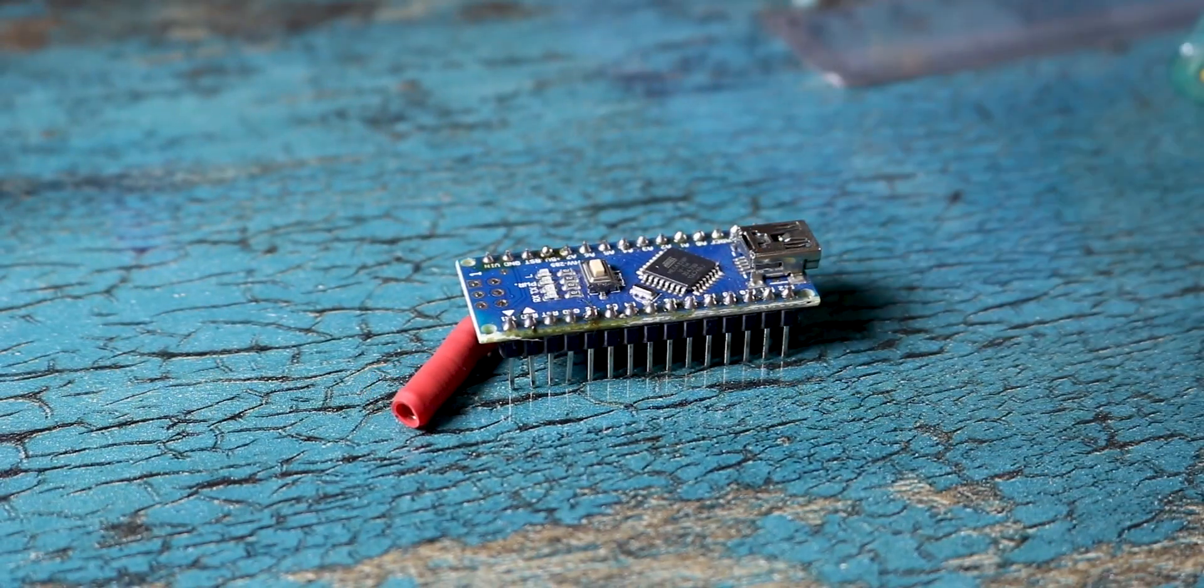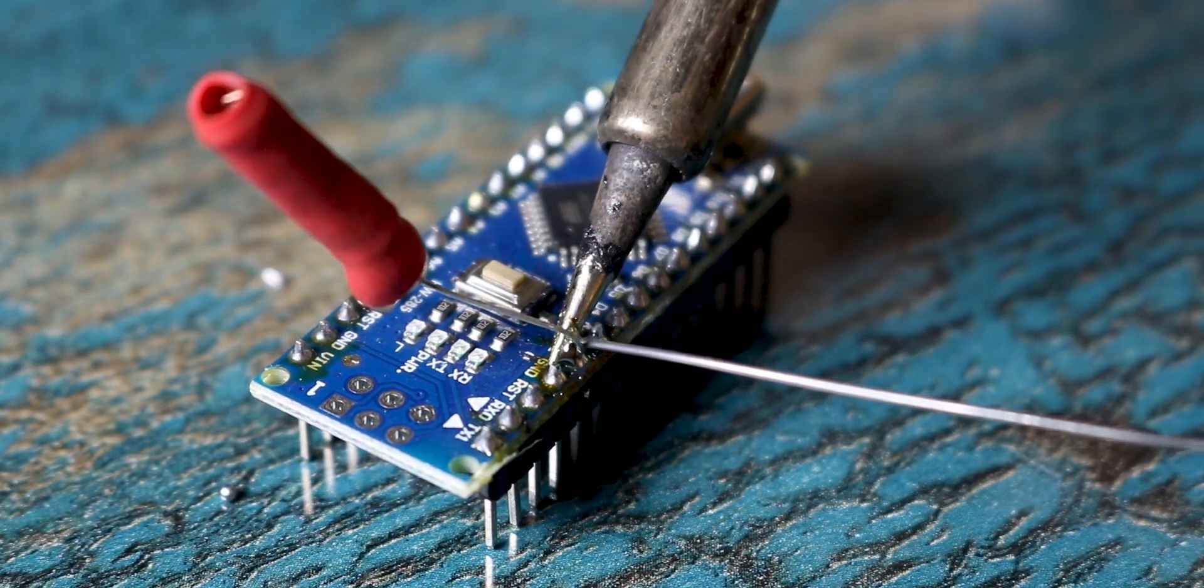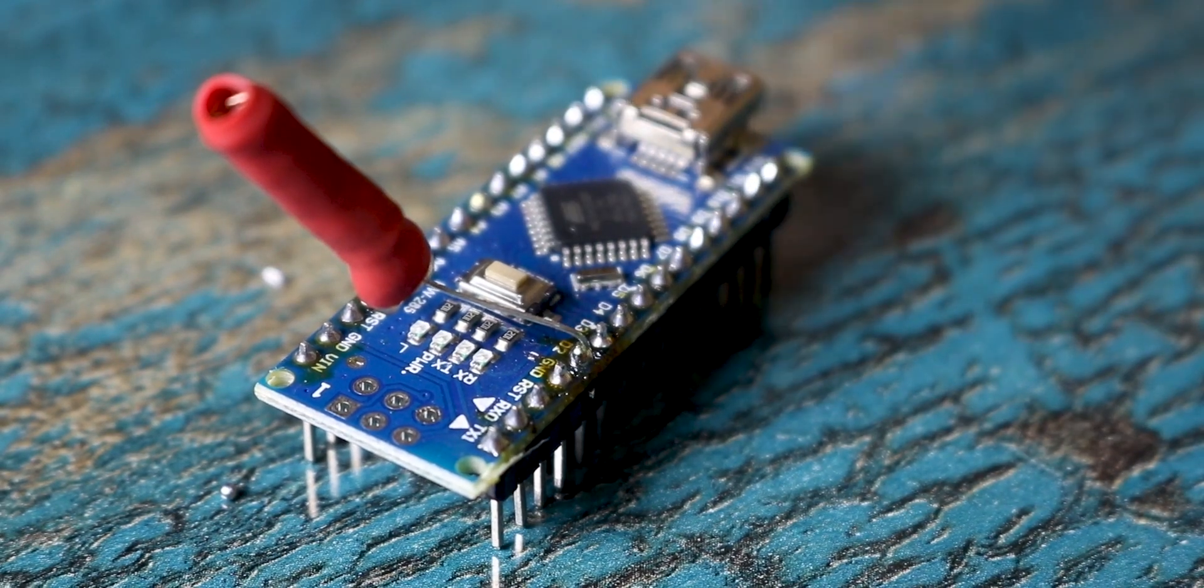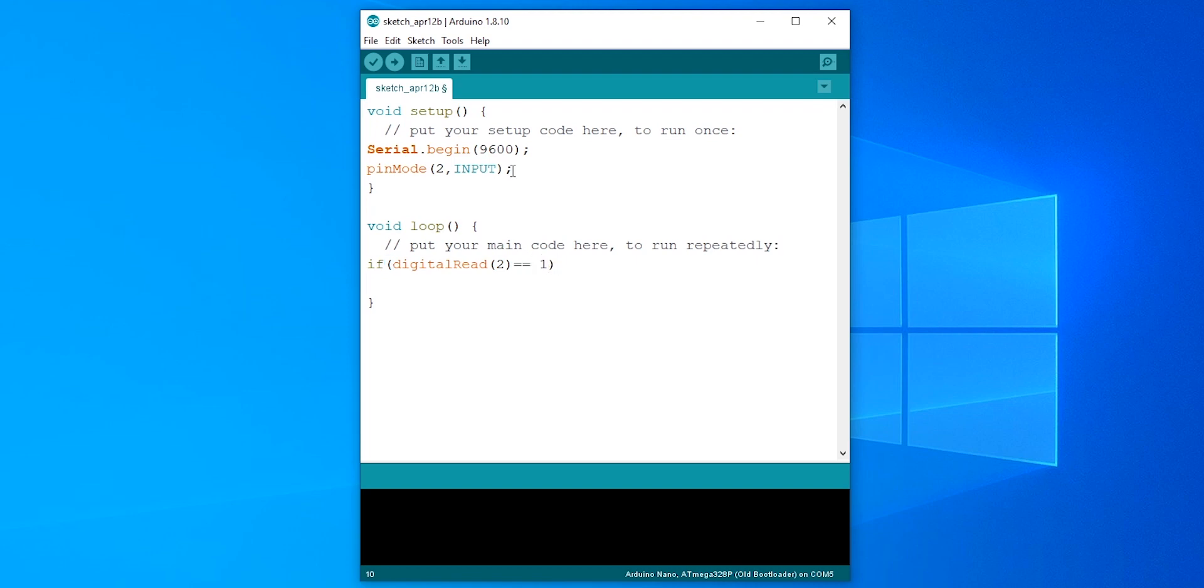To test the sensor, I used an Arduino Nano. Simply solder one end to the 5V and the other end to digital pin 2 of the Arduino. After which I wrote this simple code and as you can see, the sensor is working flawlessly.